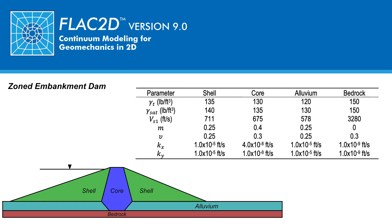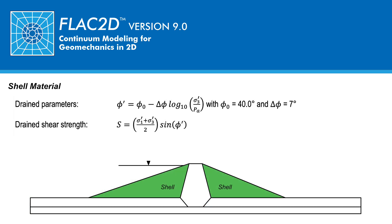More modeling specific material parameters are presented next. The shell material is modeled to behave drained during earthquake shaking. The drained shear strength is selected to relate only to drained friction angle representative of a gravelly shell that varies with minimum principal effective stress as shown. The associated drained shear strength assigned in the model is calculated using the equation S equals the sum of the maximum and minimum principal stress divided by 2 times the sine of the drained friction angle.